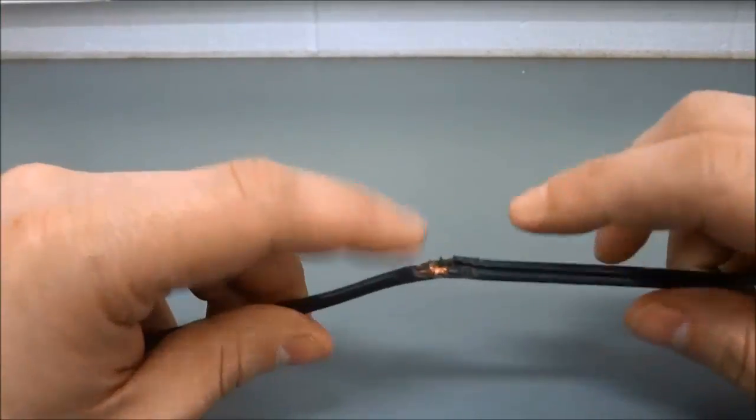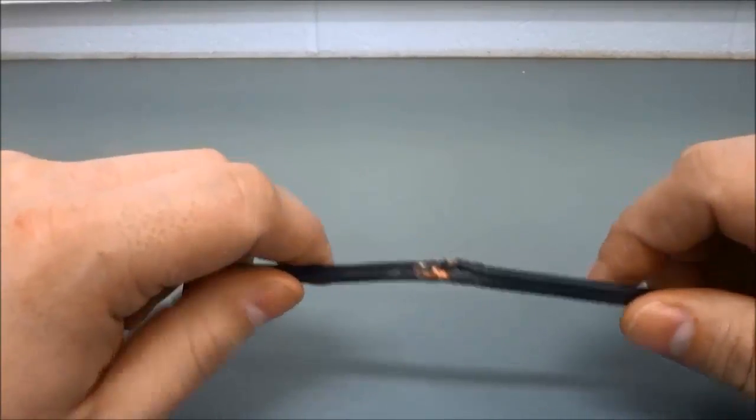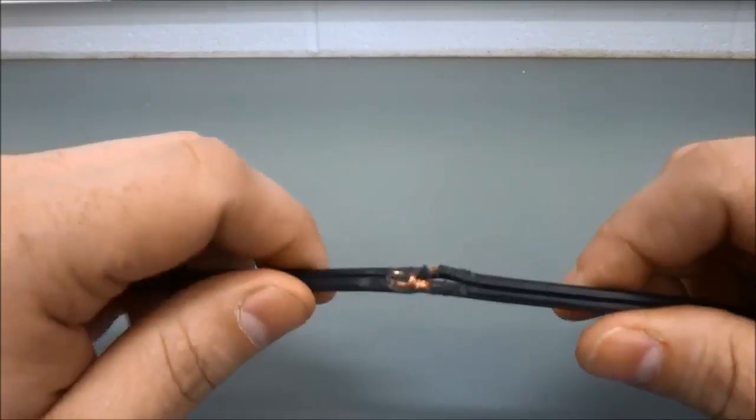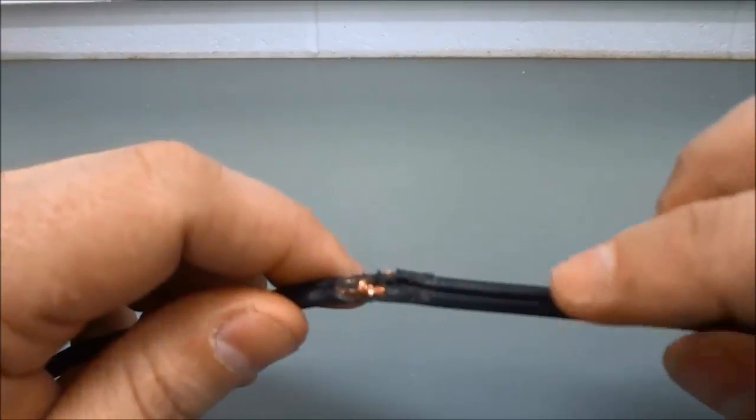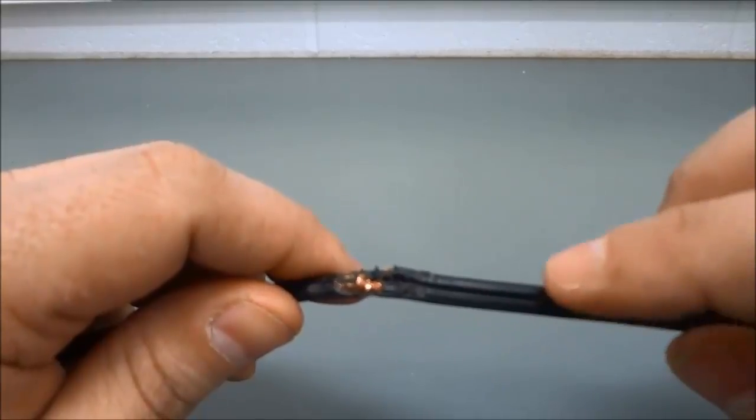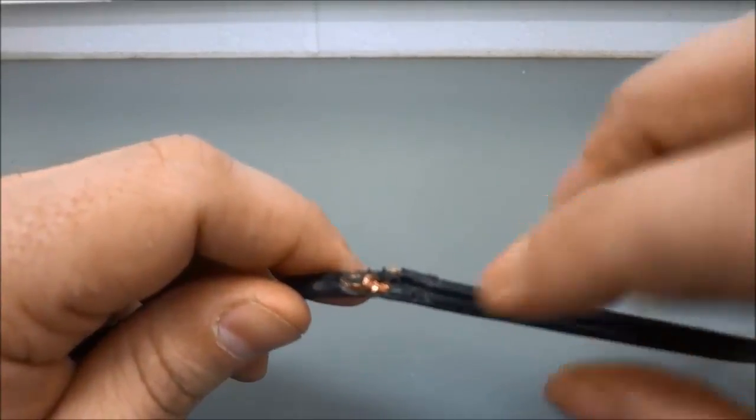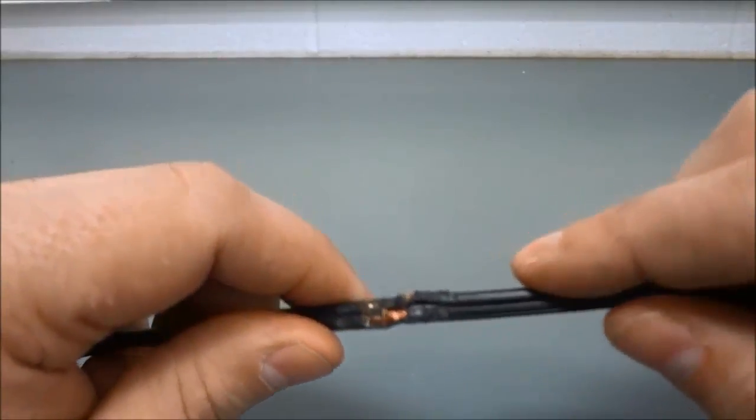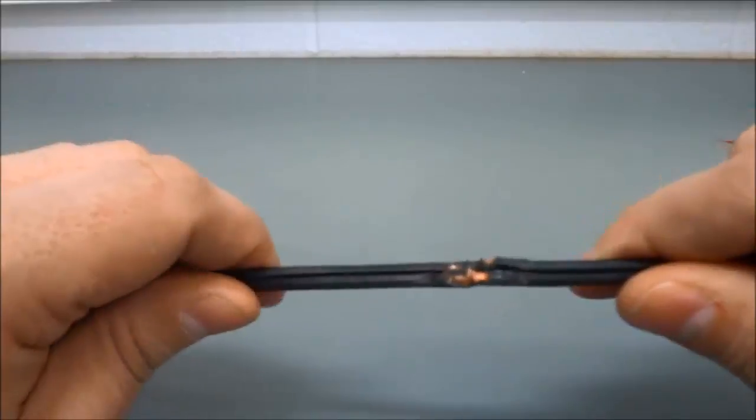So we are going to have to remove this part right here, the damaged area. But before we do that, we need to make sure that we can distinguish between the two wires. So as you can see right here, there are actually two separate wires and they are just molded together. But there are two separate wires and they are insulated completely individually.